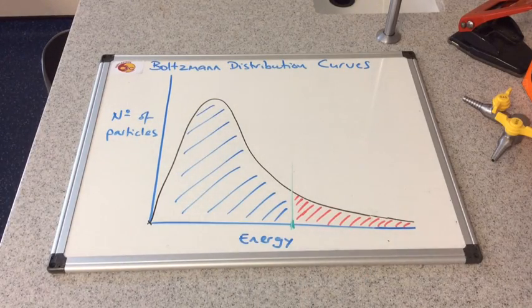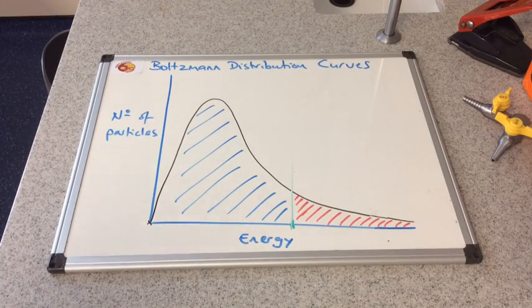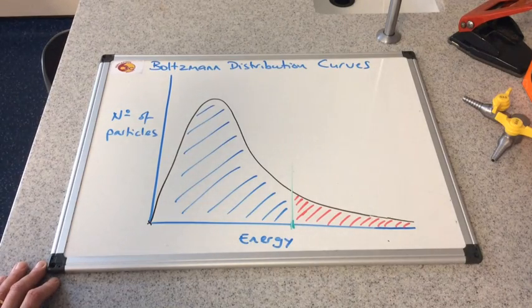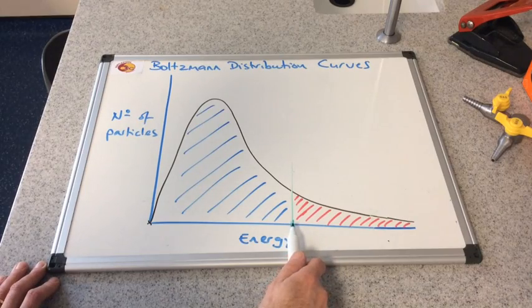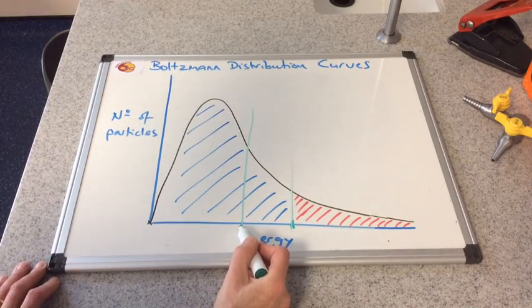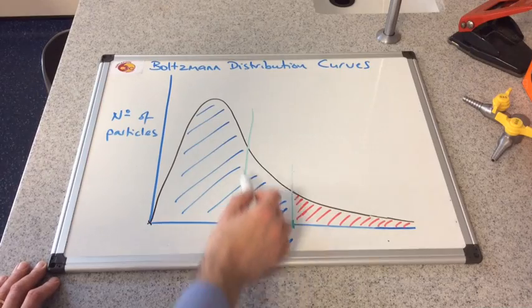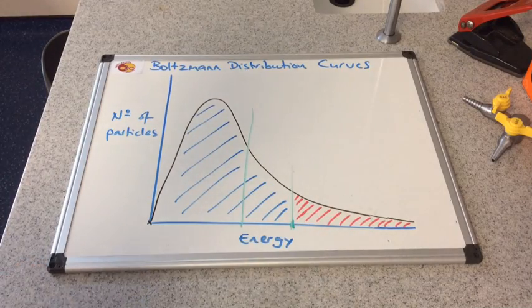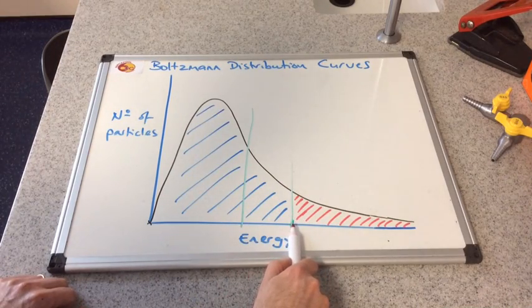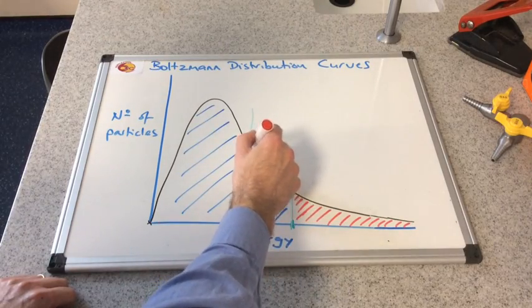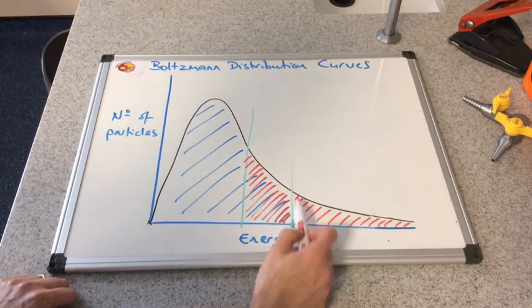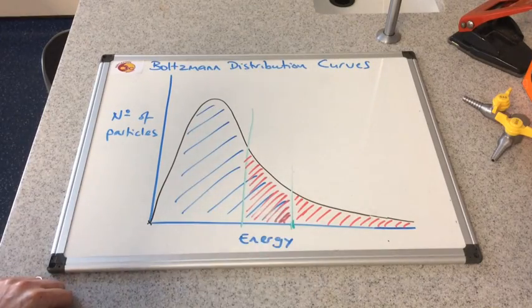So let's use the curve to explain how the catalyst performs its function. Remember we said earlier the catalyst will provide an alternative route for the reaction with a lower activation energy. So if that's the activation energy for the reaction without the catalyst, then obviously the catalyzed reaction will have a lower activation energy. So we draw an activation energy here now, and straight away you can see that all of these collisions which weren't successful before are all successful now. We've increased the area under the curve, and so we have all of these particles that can now react. There are more successful collisions per second.